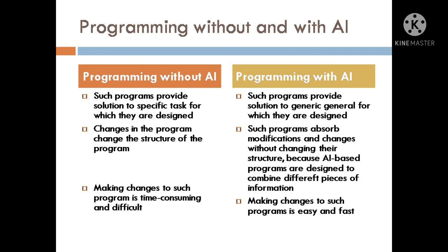Programming with Artificial Intelligence: such programs provide solutions generally for what they are designed, and they absorb modifications and changes without changing their structure, because AI-based programs are designed to combine different pieces of information. Programming without Artificial Intelligence: such programs provide solutions to specific tasks for which they are designed, and changes in the program change its structure, making modifications time-consuming and difficult.